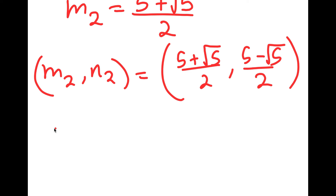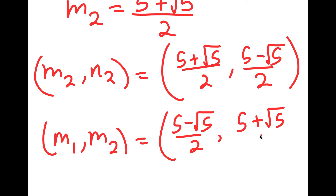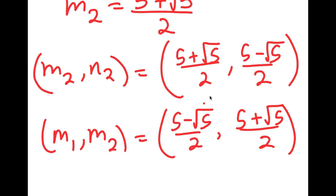So to summarize: solution 1 is (m₁, n₁) = (5 minus the square root of 5 over 2, 5 plus the square root of 5 over 2), and solution 2 is (m₂, n₂) = (5 plus the square root of 5 over 2, 5 minus the square root of 5 over 2). Notice how these two solutions are just the reverse order of each other — they switched, and it still works out. These are my two solutions.